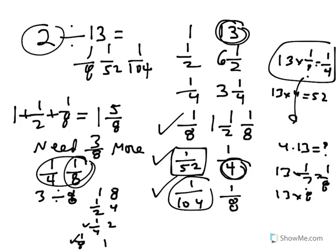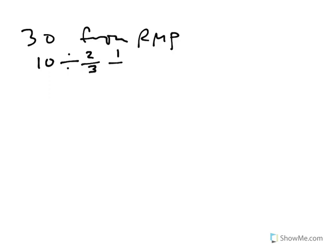I'm going to do another question. This one is question number 30. Question 30 wants you to divide 10 divided by 2 thirds 1 tenth. This is 10 divided by 23 over 30.